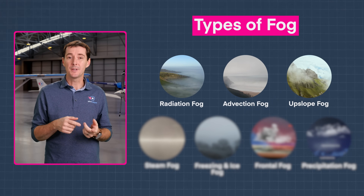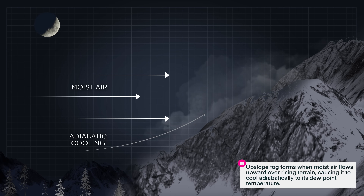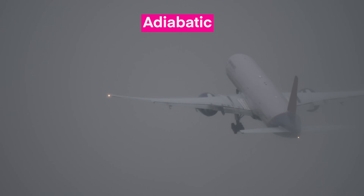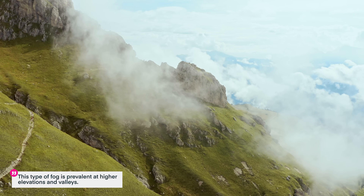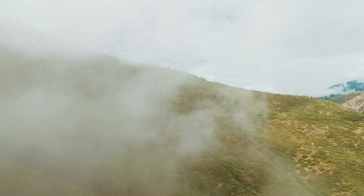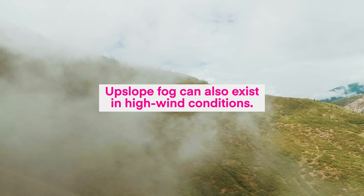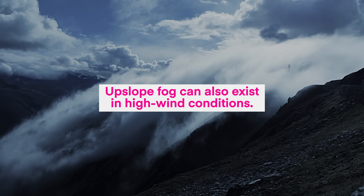Another type of fog associated with wind is called upslope fog. Upslope fog forms when moist airflow goes upward over rising terrain, causing it to cool using a process called adiabatic cooling in order for the dew point temperature to be reached. The adiabatic process causes rising air to cool and sinking air to warm. This type of fog is more common at higher elevations and can build downward into valleys. Upslope fog can also exist in high wind conditions because that increases the lift and the adiabatic cooling.